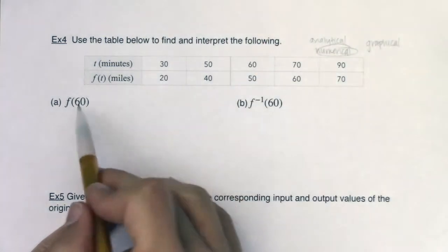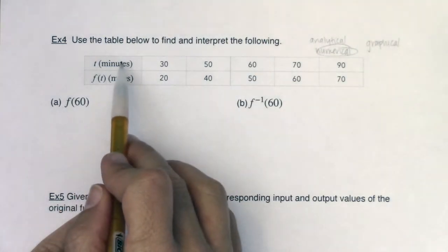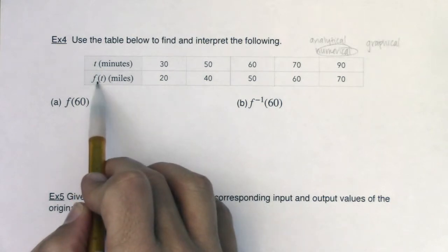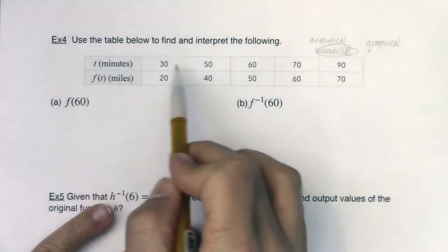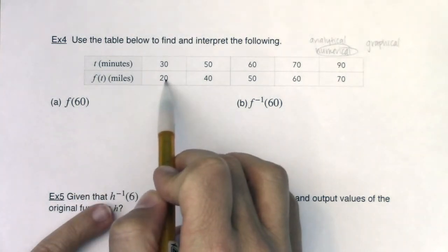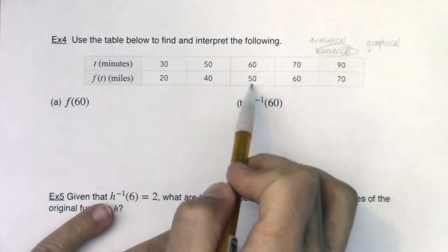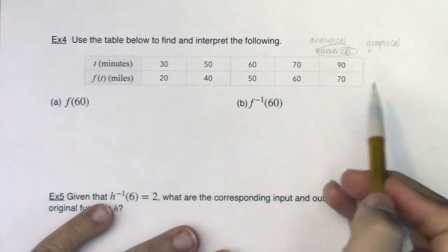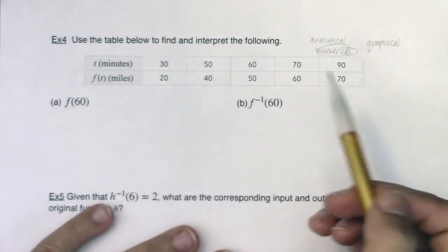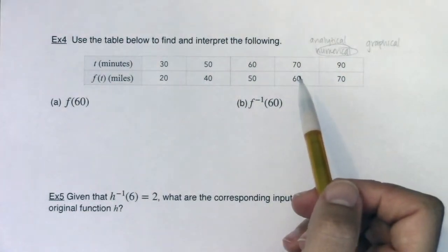All right, let's unpack these. It looks like minutes and miles — t and f of t. In 30 minutes, something traveled 20 miles; 50 minutes, 40 miles. So we can see this traveling context, and I don't have any further context, and that's okay — I don't really need it.